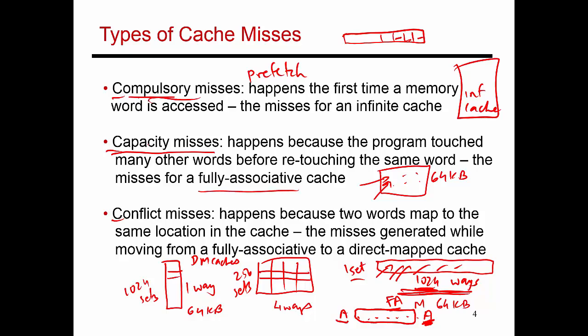When I move from a fully associative cache to my actual cache — say a 4-way set associative cache — any additional misses I encounter are because of the conflicts introduced by the smaller, more constrained structure.